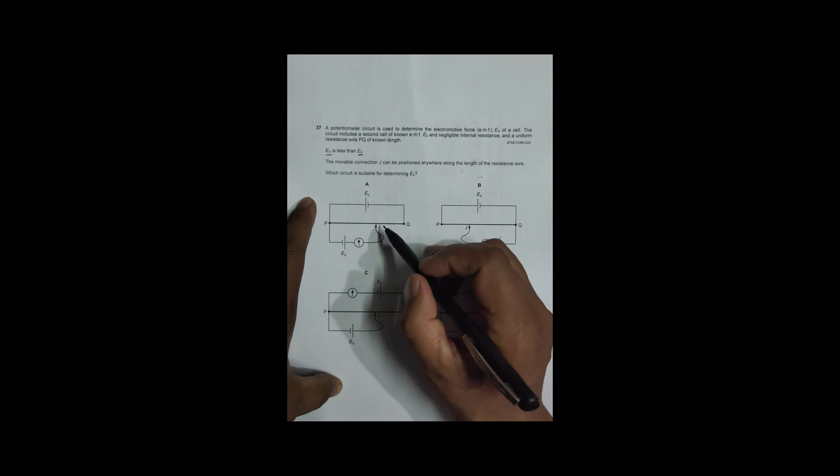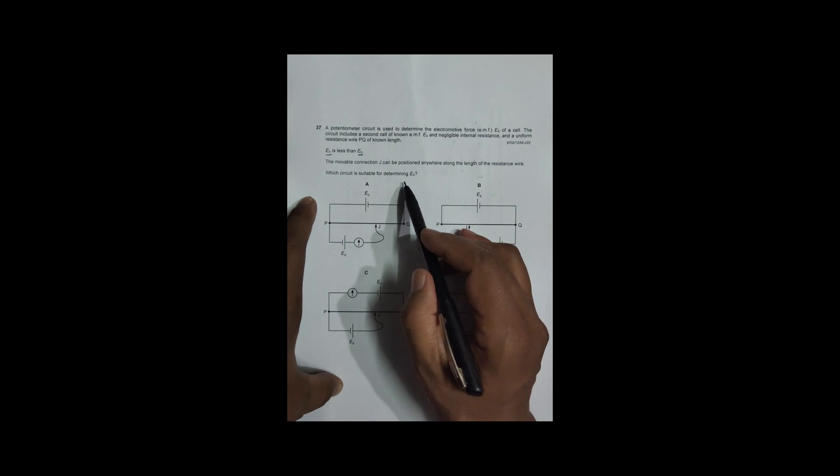The mobile connection J can be positioned anywhere along the length of resistance wire. Which circuit is suitable for determining Ex? So the first thing is, here E0 gives a positive potential here and a negative potential here. So that means the potential here is also slightly negative to this. In order that we measure the EMF of this thing, its potential should oppose this potential, so that we can have something zero here at some point of time. But what happens here is, here we have plus, minus, plus and this is minus. So current flows like this. This can never be equal to zero. There is no opposing. So this circuit is incorrect.